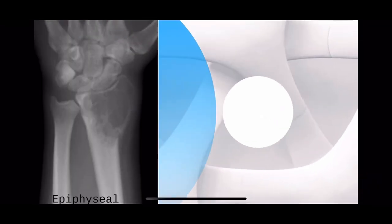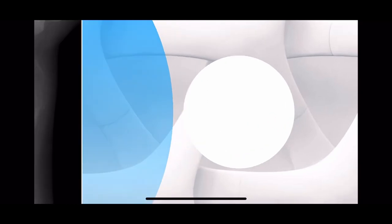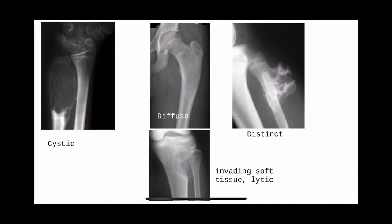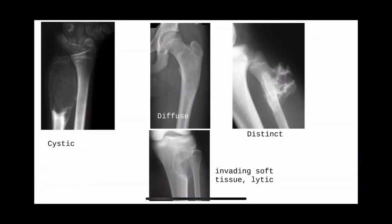Did we miss out on something? Yes — this bone tumor is invading the soft tissue, so it's malignant for sure. It's lytic, looks like a cyst — it has to be telangiectatic osteosarcoma.